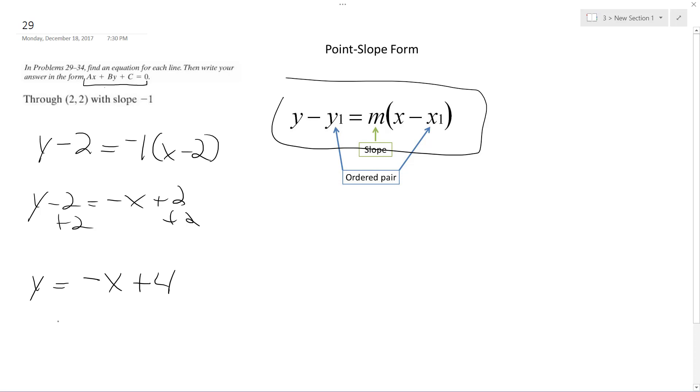Oh, and they want it in that form, so actually it's going to be x, so I move everything to the left side, x plus y minus 4 equals 0. Okay, that's it. Thanks for watching.